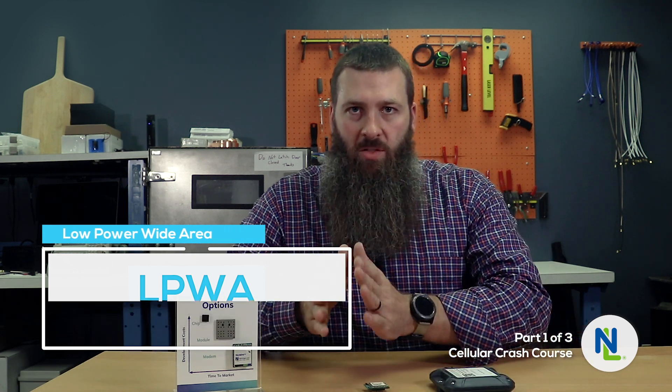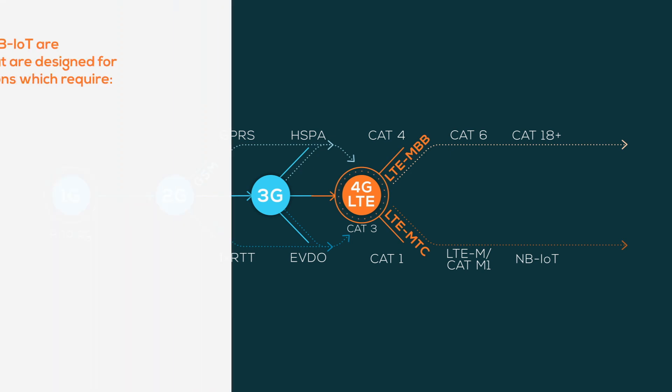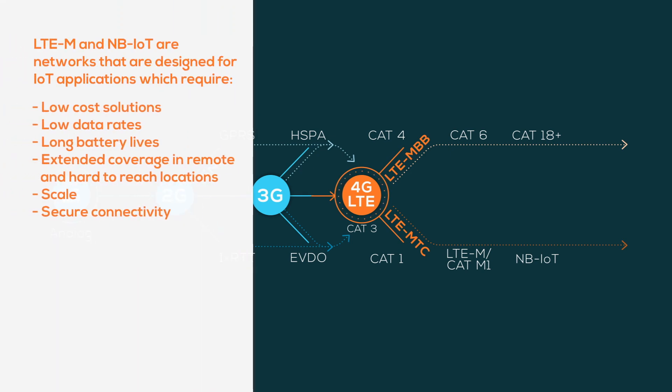That's kind of where we're at right now. On the high end there's Cat 16, 17, 18, 19, and so on. And then on the lower path, where most of us are working, is the LTE-M, NB1, NB2 type of path where we're really focused on keeping the cost down and keeping the power down.